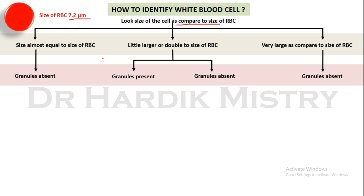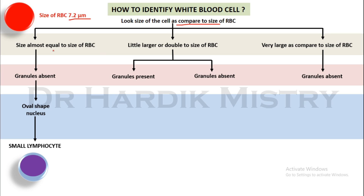Next, find out whether granules are present or absent. If granules are present, check for the number of lobes of the nucleus. If the size of the cell is almost equal to the size of RBC, granules are absent, and the nucleus is oval in shape, then this cell is known as small lymphocyte.